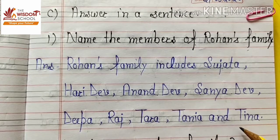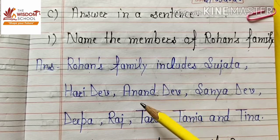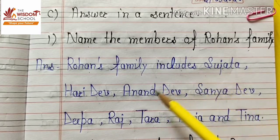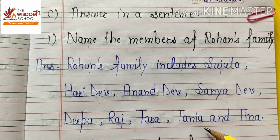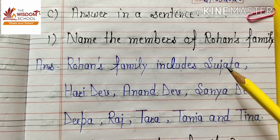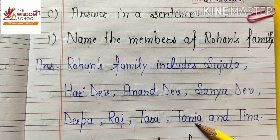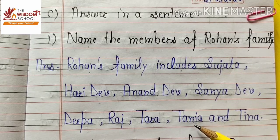In Rohan's family, these are all members: Tara, Tanya, and Tina. You have to learn their names and write them down. Is it clear, students?